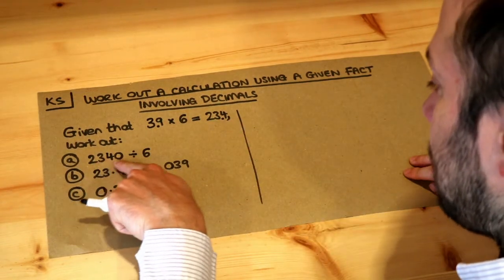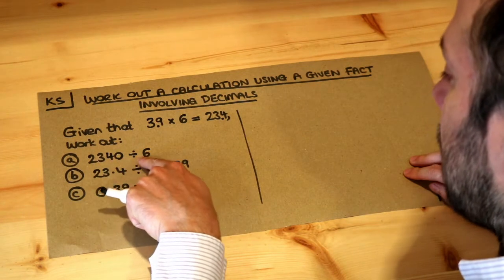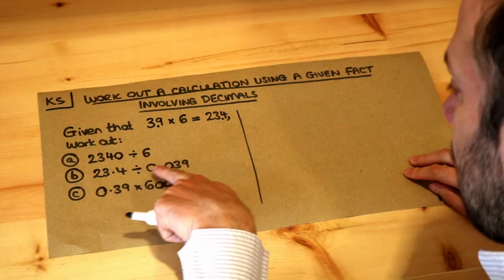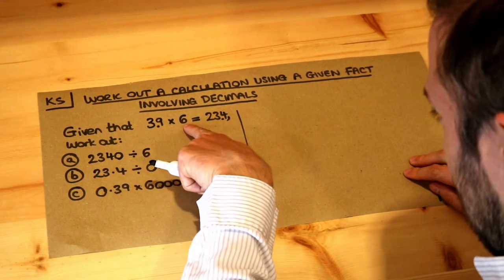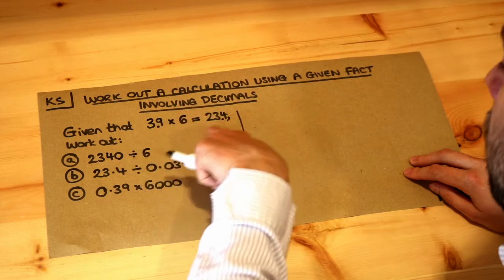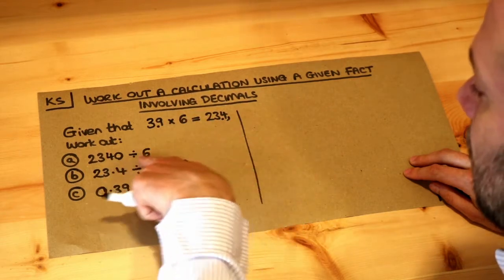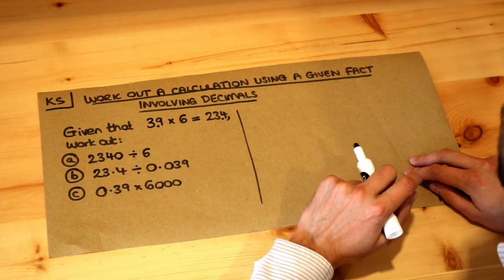Now let's think about A. We want to do 2340 divided by 6. Can you see that this 2340 looks a bit like the 23.4 and we've got the 6 here? Is there some way we can rearrange this original calculation to get something that almost looks like that? Well yes there is.